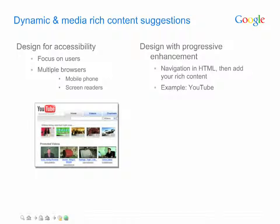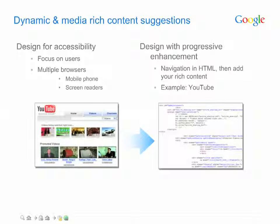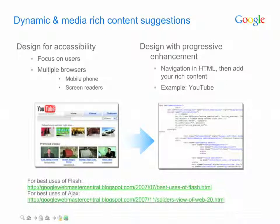With careful planning, however, sites can include dynamic and media-rich elements while still remaining reasonably accessible to users and Googlebot. Consider structuring your site so that these elements are extras, with your site's core information and navigation rendered in plain text for Googlebot and all users without Flash. This is otherwise known as graceful degradation. For additional useful suggestions, check out the two blog entries listed on this page.